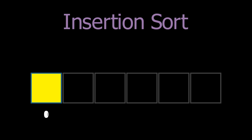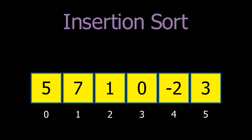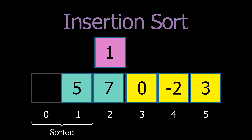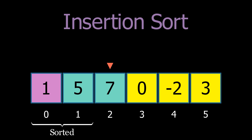The next algorithm is insertion sort. We start by assuming that the first element is already sorted. Then, we take each subsequent element from the unsorted portion of the list and insert it into its correct position within the sorted portion. For each element, we compare it with the elements in the sorted portion and shift the larger elements to the right to make space.